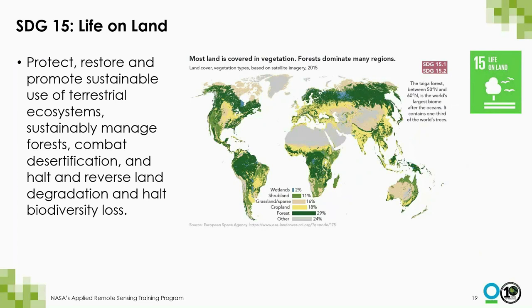SDG 15, life on land, is focused on preserving diverse forms of life on land and requires targeted efforts to protect, restore, and promote the conservation and sustainable use of terrestrial and other ecosystems. Goal 15 focuses specifically on managing forests sustainably, halting and reversing land and natural habitat degradation, successfully combating desertification, and stopping biodiversity loss — all to ensure that the benefits of land-based ecosystems, including sustainable livelihoods, will be enjoyed for years to come.